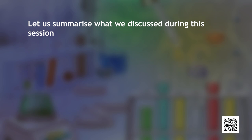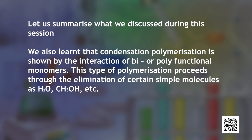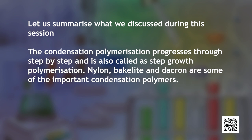Let us summarize what we have discussed during this session. In the presence of an organic peroxide initiator, alkenes and their derivatives undergo addition polymerization or chain growth polymerization through a free radical mechanism. Polythene, teflon and orlon are some important addition polymers. Condensation polymerization is shown by the interaction of bi- or polyfunctional monomers, and proceeds through the elimination of simple molecules such as water or alcohol. It progresses step by step and is called step growth polymerization.